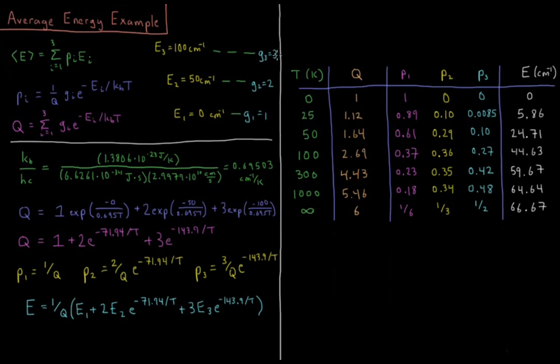In this case, g3 equals 3 and e3 equals 100 wave numbers. When we multiply that out, we have q equals 1 plus 2e to the minus 71.94 over t plus 3e to the minus 143.9 over t.